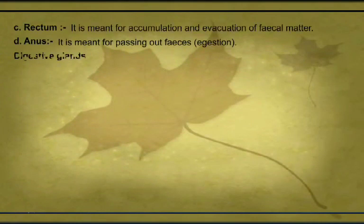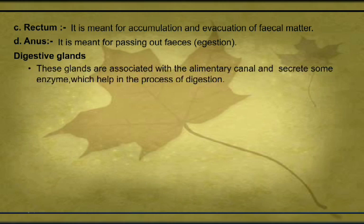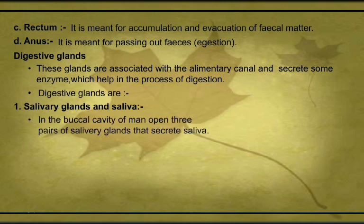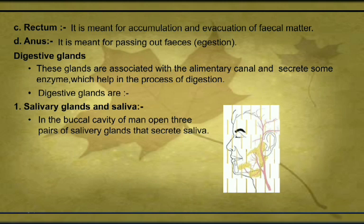Digestive glands are packet-like structures in which enzymes are present; enzymes help in digestion of food. The first is the salivary gland: three pairs of salivary glands are present in our body. They secrete saliva, which contains an enzyme called salivary amylase or ptyalin (P-T-Y-A-L-I-N). The first pair is the parotid gland, present just below the ear.